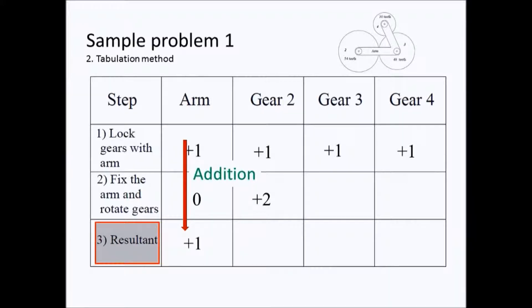And this is also true for the next column for gear two where the addition of the number of rotations contained in the two boxes above will give us three. Actually we simply put two so that we will have three as our resultant because that is one of our givens.